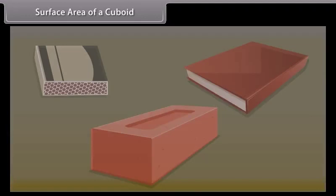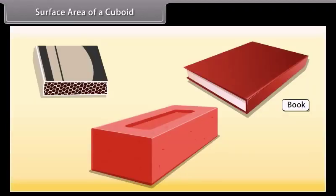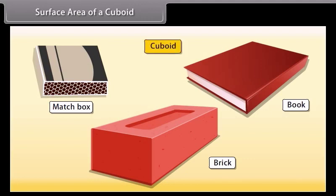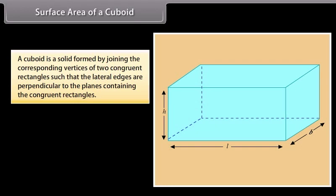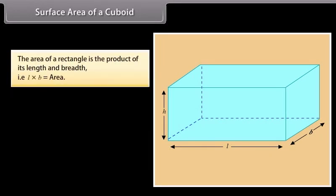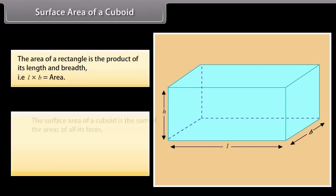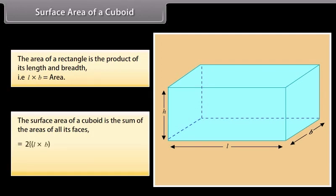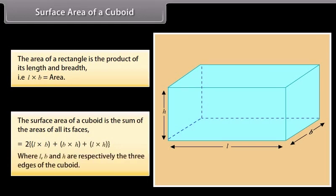Students, look at these things — a book, a matchbox, a brick. All these are examples of a cuboid. A cuboid is a solid formed by joining the corresponding vertices of two congruent rectangles such that the lateral edges are perpendicular to the planes containing the congruent rectangles. The cuboid has six surfaces, each congruent and parallel to the one opposite to it. The surface area of a cuboid is equal to 2 times (length × breadth + breadth × height + length × height), where L, B, and H are respectively the three edges of the cuboid.